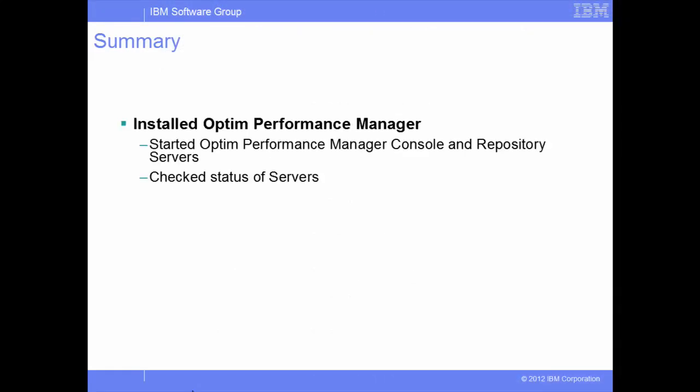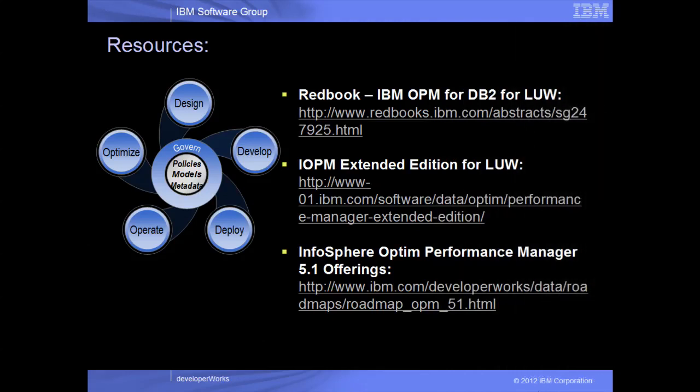To summarize, we have installed the Infosphere Optum Performance Manager server and activated the license. We have also optionally started and checked the status of the console server and repository server manually using the opmstart and opmstatus shell scripts respectively. For more information about various deployment types and configurations for Infosphere Optum Performance Manager, refer to the red book shown here. For more information about IBM Infosphere Optum Performance Manager Extended Edition and version 5.1 product offerings, visit us on the web here.